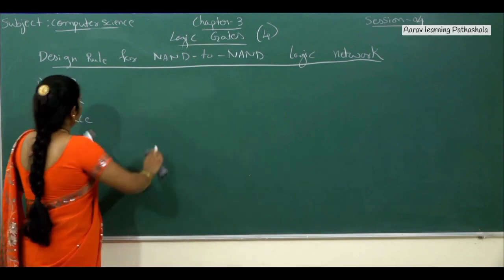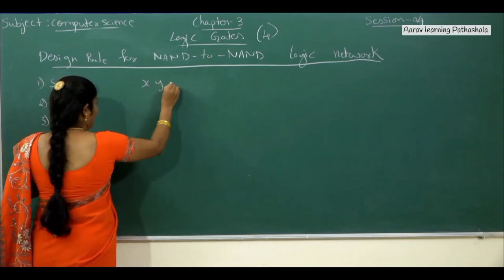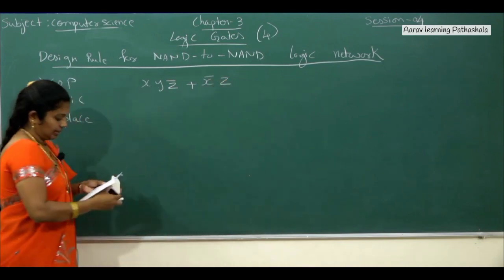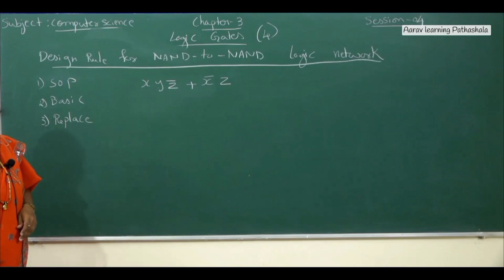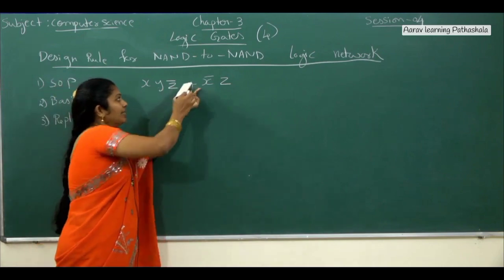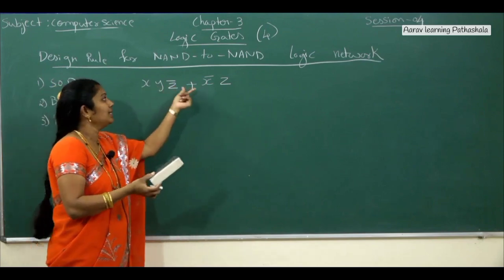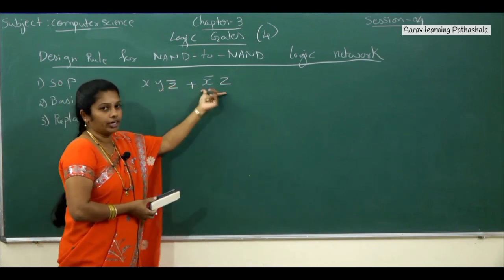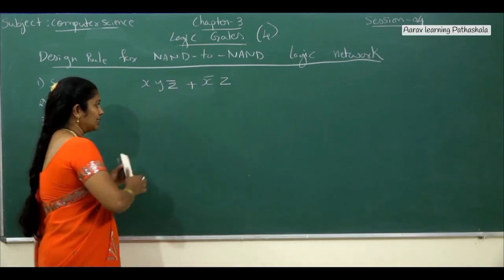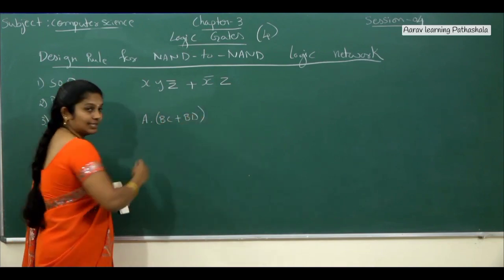Now I am going to explain with an example. Consider the expression X Y Z̄ plus X̄ Z. The first step is to check whether it is in sum of product form. Here we have a sum of products — it is in the correct format. In the question itself we are given in the form of sum of product.